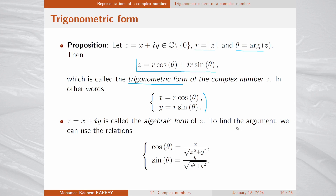To retrieve the argument from the algebraic form, we use: cos θ = x divided by the modulus, which equals the square root of x² + y²; and sin θ = y divided by the square root of x² + y².